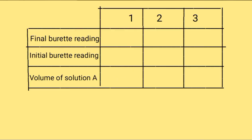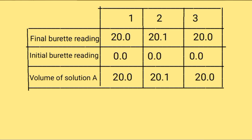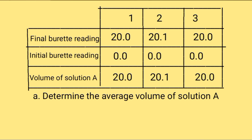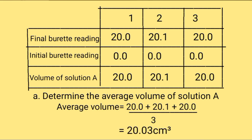Note that when you are recording the volumes in the table, you must consider the following things. All your values must be to one decimal place, that is either 20.0, 20.1. 2 or 3 values in the table must be within a range of plus or minus 0.1. Part a: Determine the average volume of solution A. The average volume equals 20.0 plus 20.1 plus 20.0 divided by 3, which gives you 20.03. The answer must always be given to four significant figures.